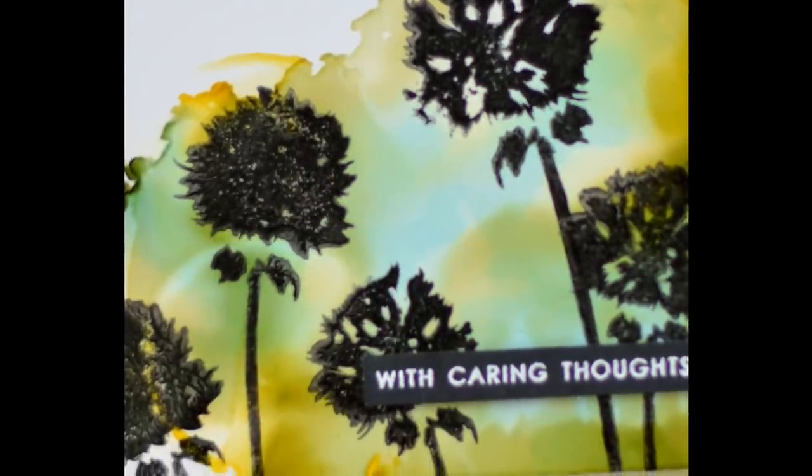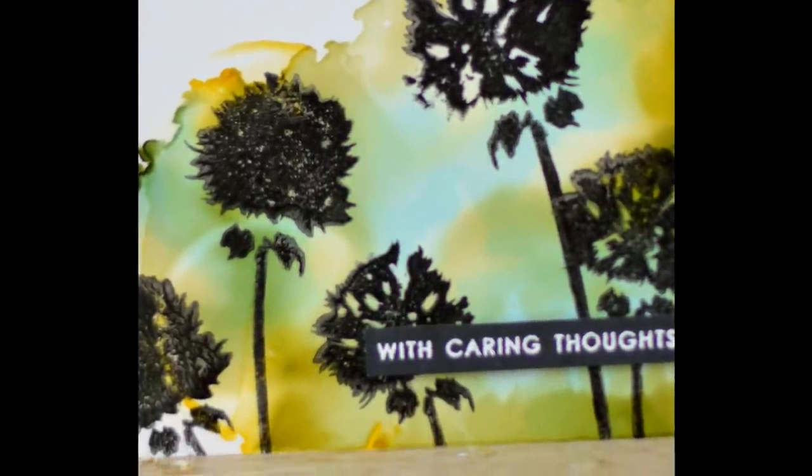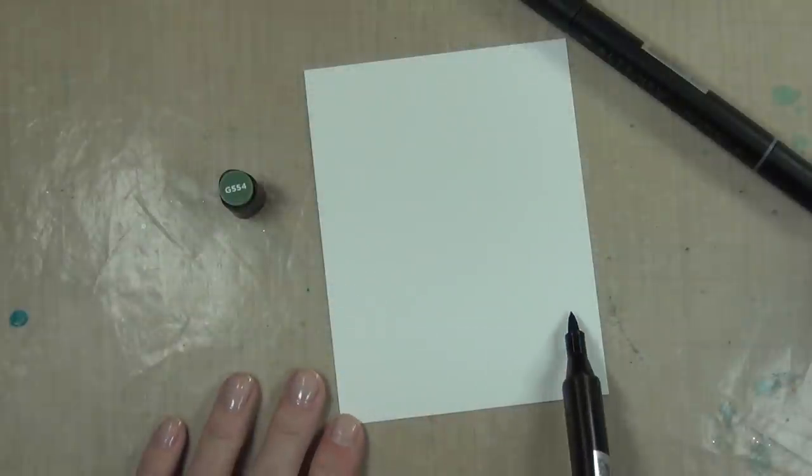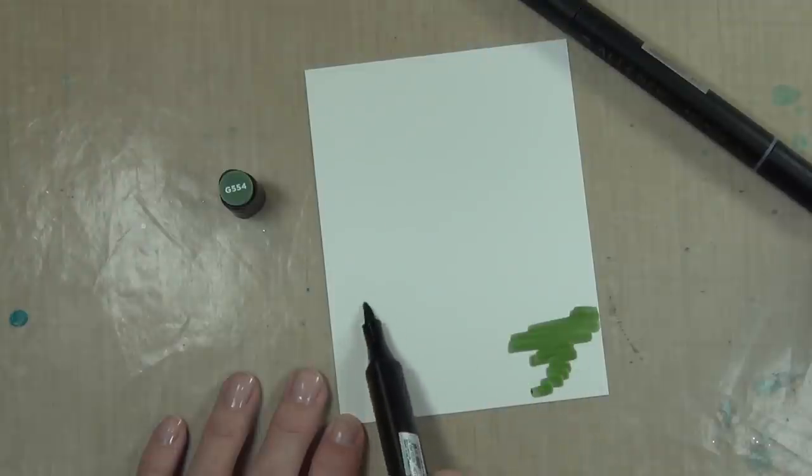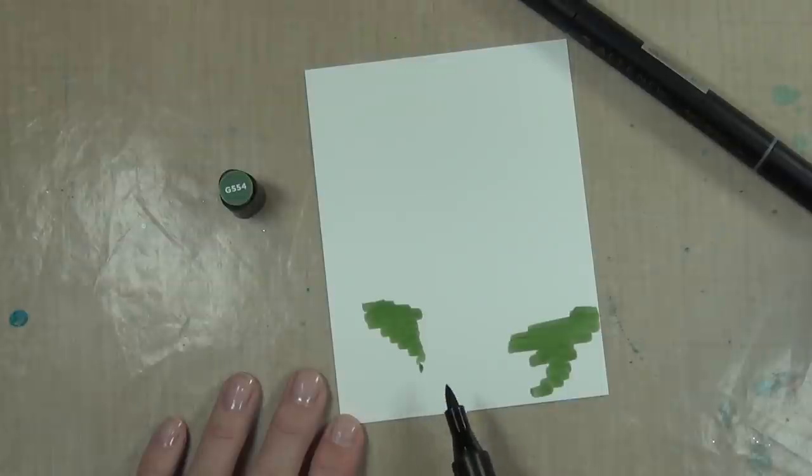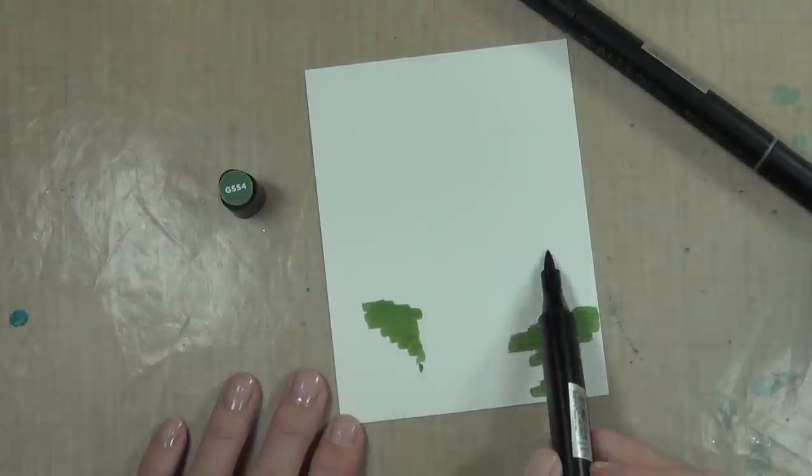Hi, it's Therese and I'm here for Altenew. Today I decided to use the Artist Markers and some Yupo paper together and see how it goes. I've cut a piece of the white Yupo paper, this is a synthetic paper, and I've cut it to the same size as my card front.